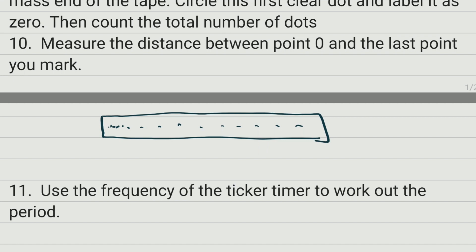You are going to select the first dot that you can see clearly, and that dot will be dot number zero. Then you start counting like one, two, three, four, five, six, seven, eight, and nine.